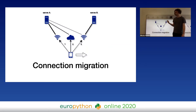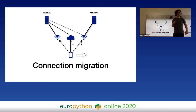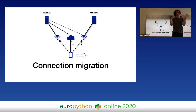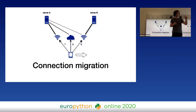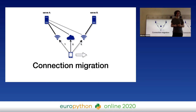Another interesting QUIC advantage is connection migration. Unlike TCP, QUIC does not identify connections using an IP address and port number. Instead, it uses a unique connection ID sent inside the connection. Thanks to that, it's possible to switch connections — for example, you disconnect from Wi-Fi, get onto a mobile signal, and your requests should be able to continue without any interruption.